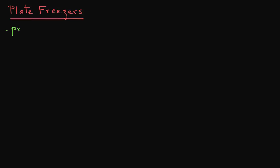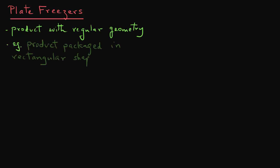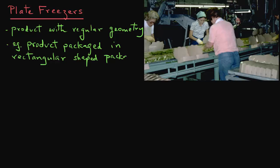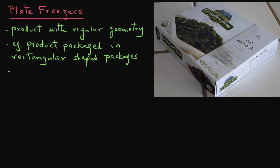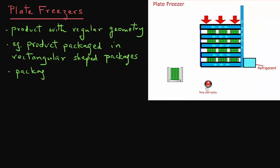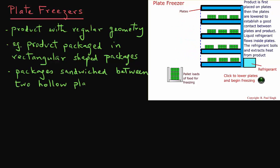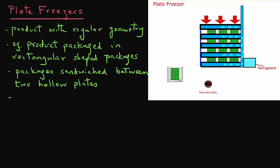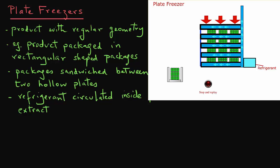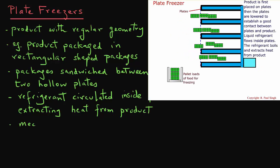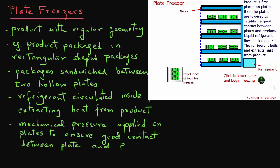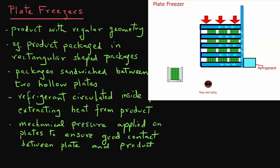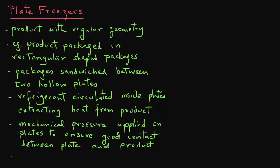In plate freezers, we use a product with regular geometry, meaning the product is packaged in rectangular shaped packages. This is a requirement of this type of freezer because the packages are sandwiched between two hollow plates of the freezer. Once the plates make contact with the package, refrigerant is circulated inside those plates to extract heat from the product. Also, mechanical pressure is applied on the plates so that there is good contact between the plate and the product, as we see in this animation.